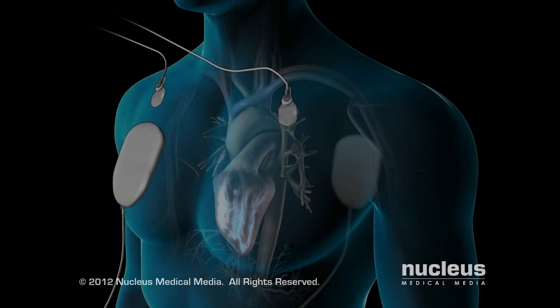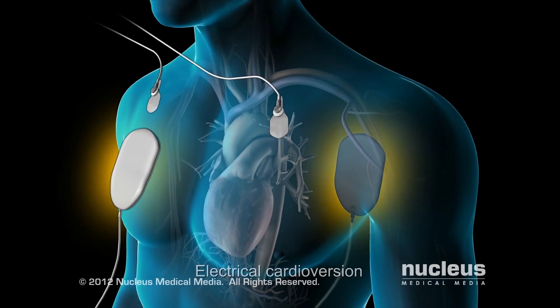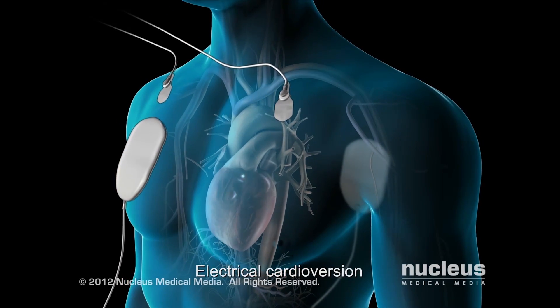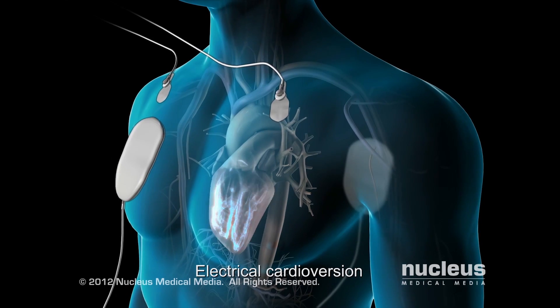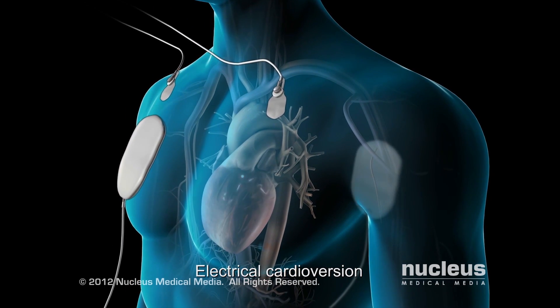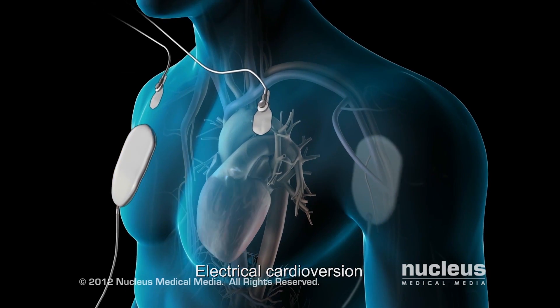If you have a cardioversion, you will need to be on blood thinners or anticoagulants before the procedure and after to prevent blood clot formation. You will be given a medication to help you relax and sleep by a doctor called an anesthesiologist. Once you are asleep, the cardiologist will deliver a small electrical shock to the heart to convert you back into a normal rhythm.